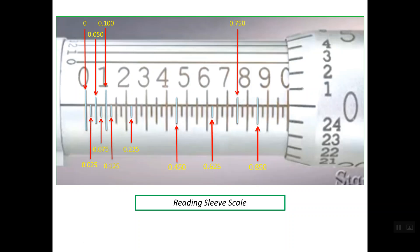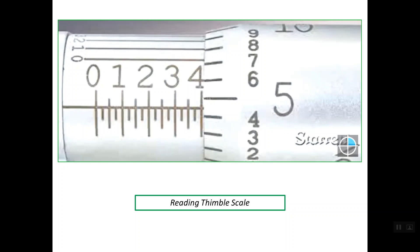Then 0.850 and 1 inch — that is how to read the lines of the sleeve scale. Now, let's recall how to read the thimble scale. We have 25 equal partitions on this scale, and each line is read by one thousandth. So line number 2 is read as 0.002, line number 3 as 0.003, and so on.